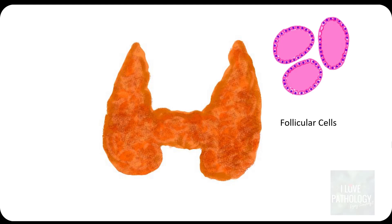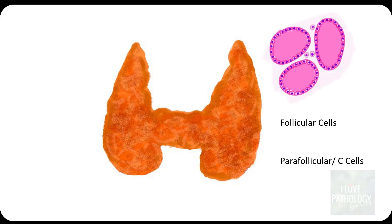The thyroid is the butterfly-shaped endocrine gland situated in front of the neck. Histologically, there are two important types of cells. First, the glands lined by cuboidal or flattened epithelium — in the more active state this epithelium will be cuboidal, later it can be flattened. This cuboidal epithelium is called follicular cells, as they line the thyroid follicles.